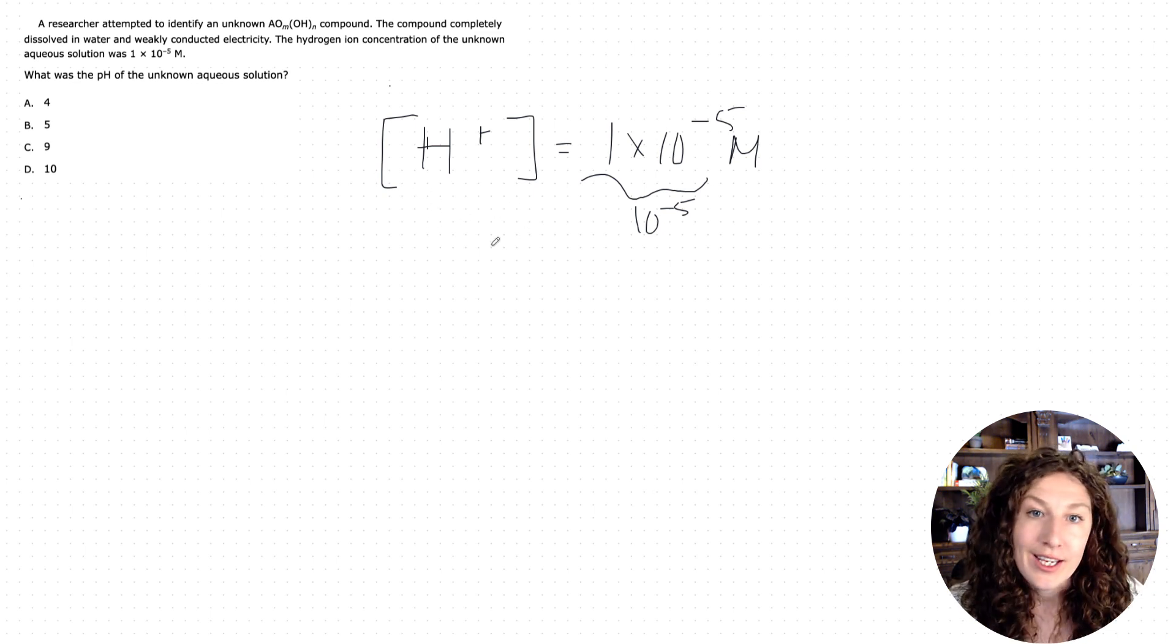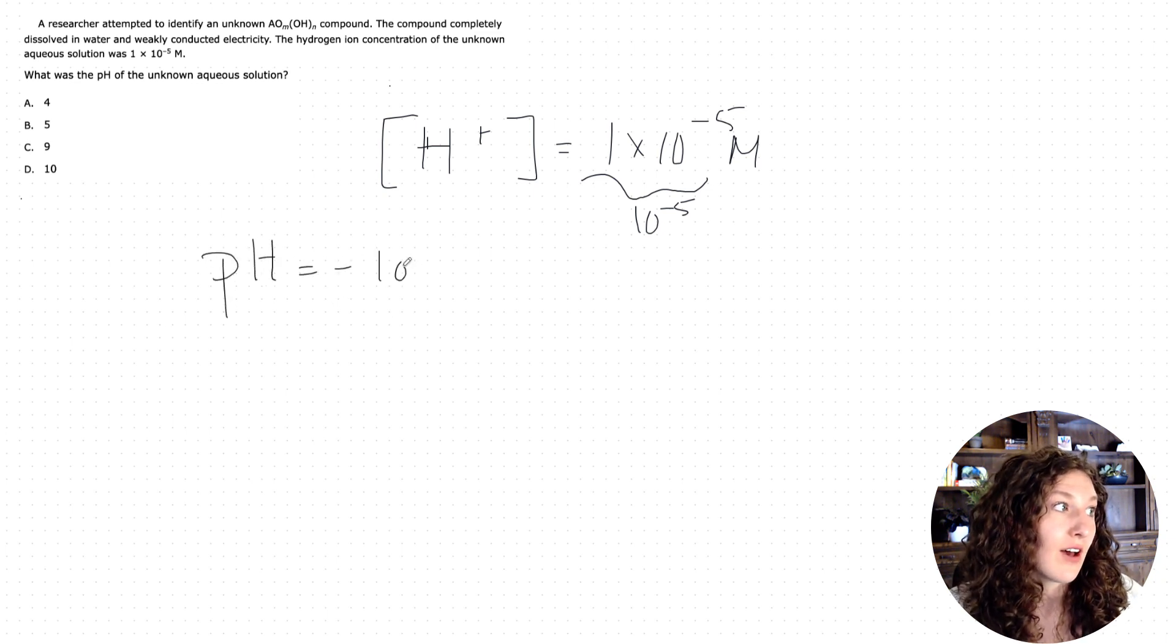Now, whenever you see the hydrogen ion concentration given in a passage or in a question stem or anything like that, it is a high likelihood that you're going to be asked about the pH. So a good test-taking tip is to write that down or highlight it the minute you see it. We'll talk about how to easily convert this in your head to a pH value. So how do we do that? Well, our equation for pH is pH equals the negative log of the H+ concentration. That's why we needed it.